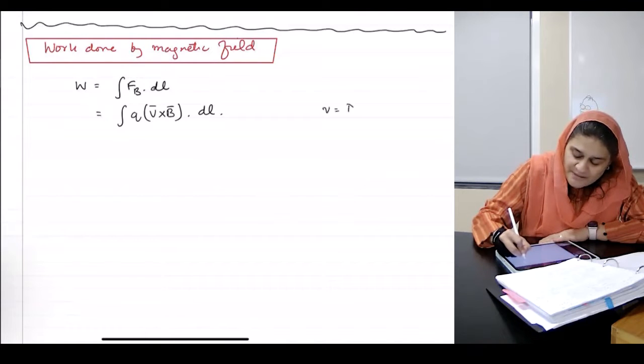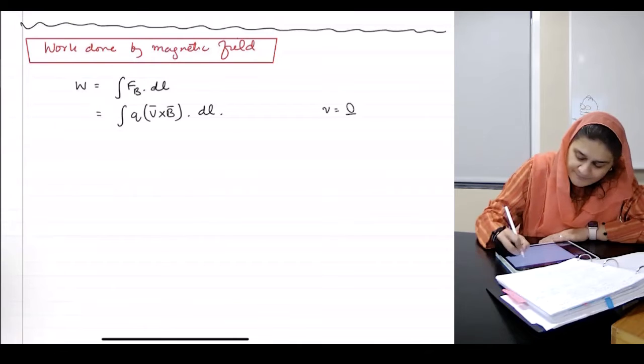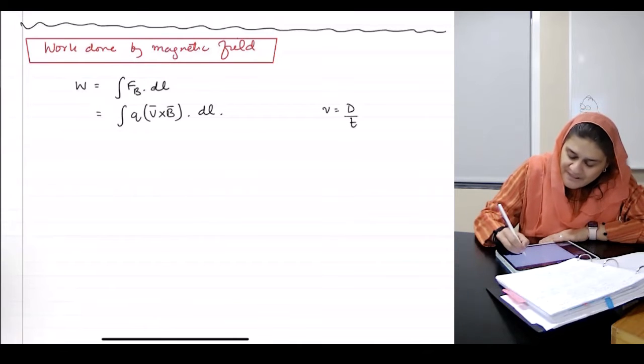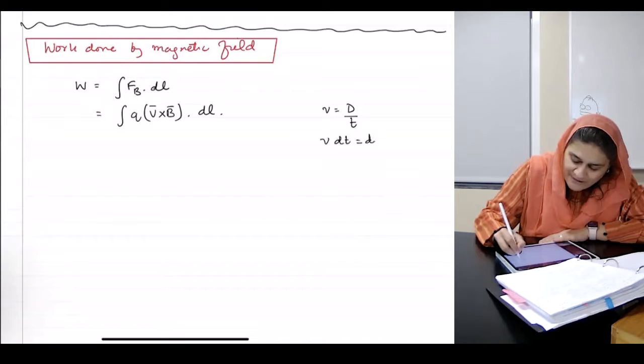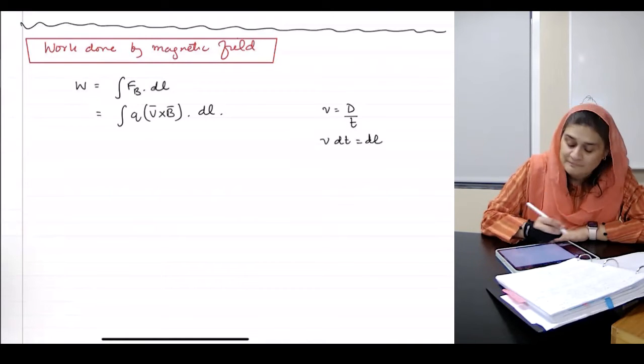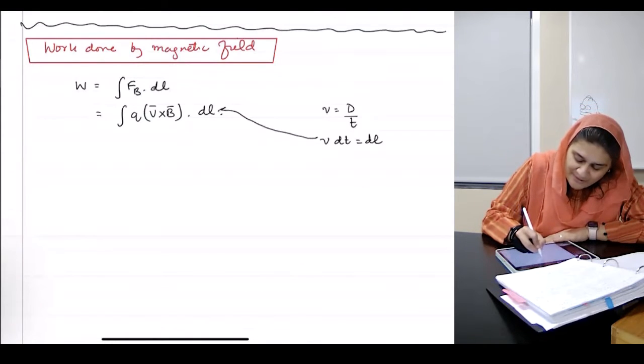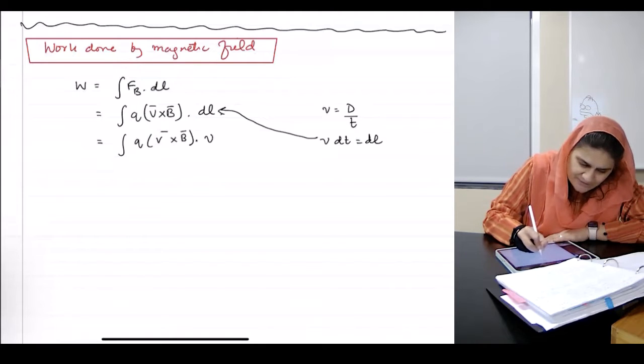Speed equals distance over time. May I write speed as DT over DL? May I plug this value back in here? Then will this become QV cross B dot V DT?